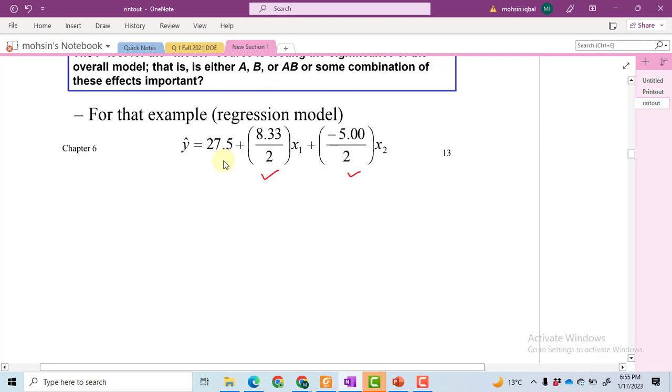The 27.5 is the mean of all the replications. If I add all 12 values, the sum comes out to be 330, and I have 12 values total, so this equals 27.5.